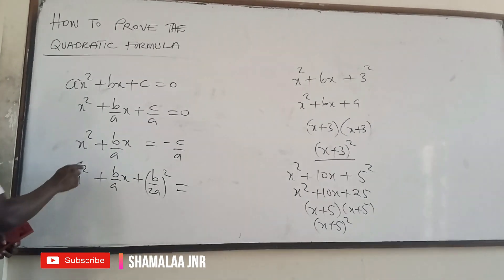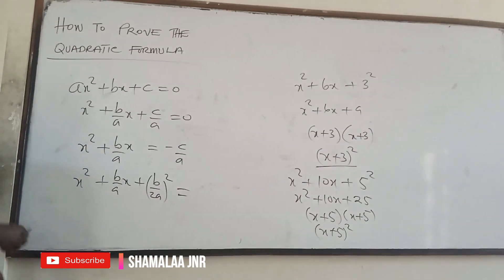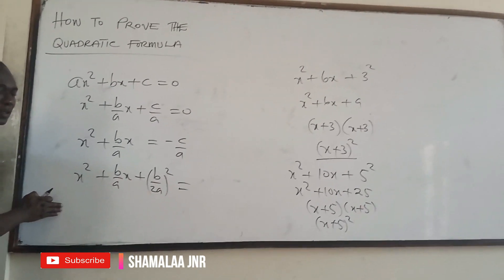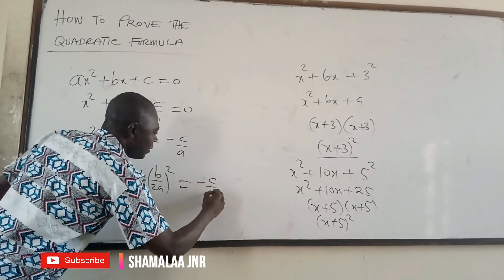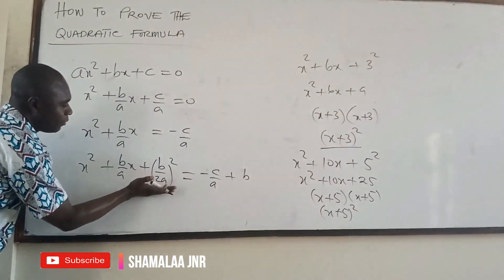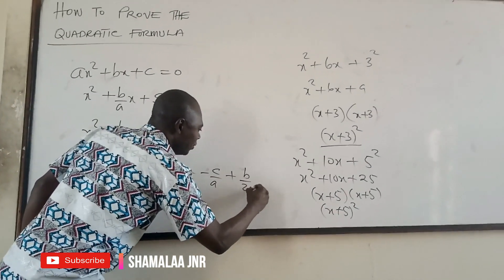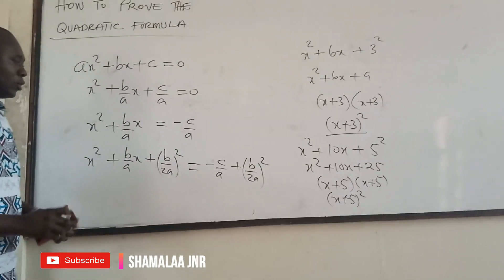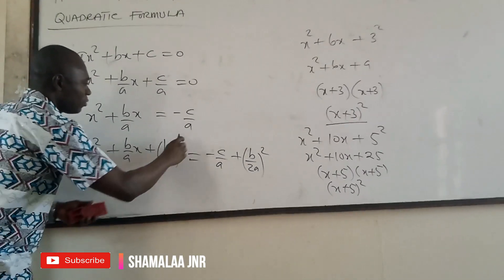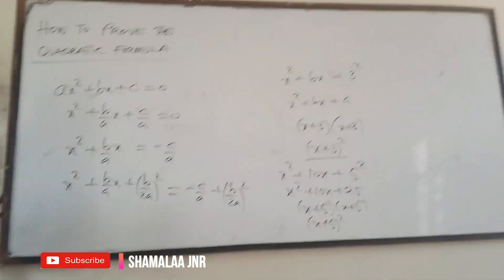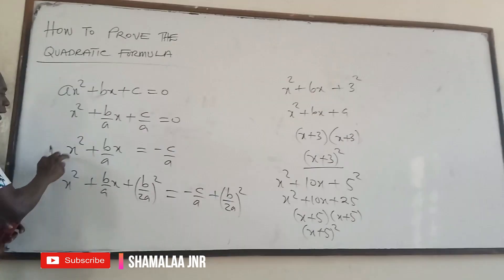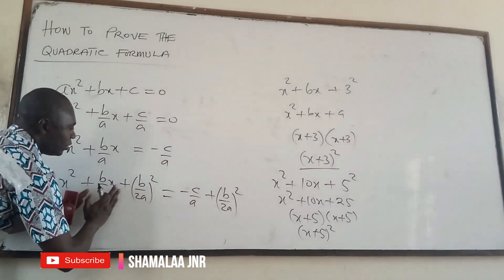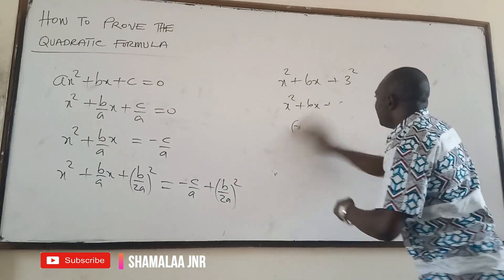Now look at the board — at this point we had the equation equal to something. We have now added (b/2a)² to the left hand side, so to balance the equation we must go to the right hand side and add (b/2a)² there also. This keeps the equation balanced and gives us what we want.